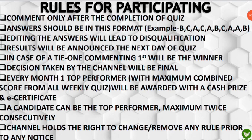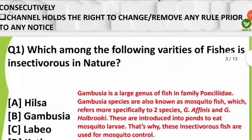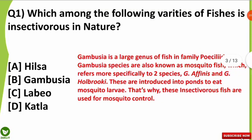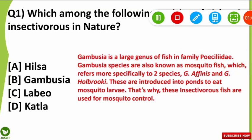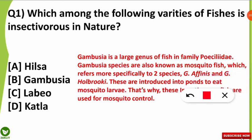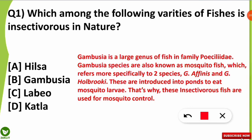The first question was: which among the following varieties of fishes is insectivorous in nature? Usually fishes feed on planktons and other organisms, but which category of fish is known as insectivorous in nature? Among the four options, the correct option is option B — Gambusia.